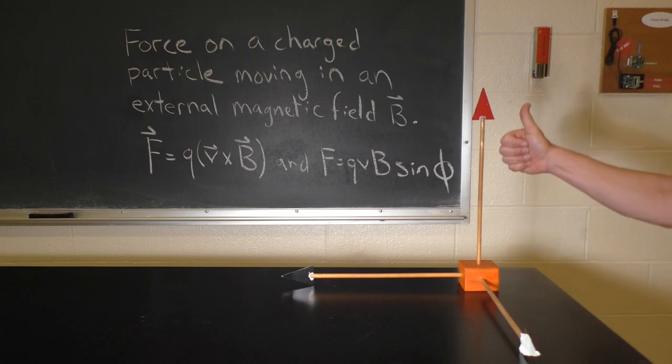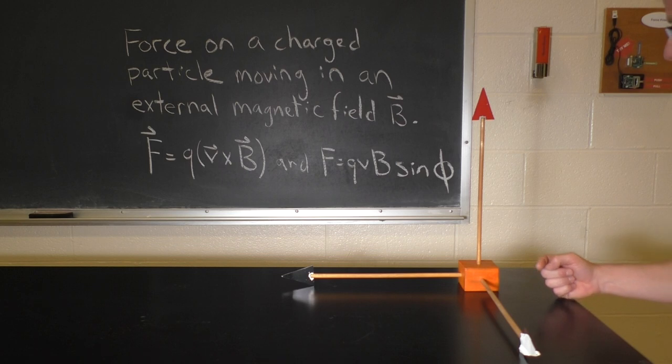So an electron tossed straight up in a magnetic field that points in that direction will experience a force not in that direction, but in that direction. That's the first rule you need to know.